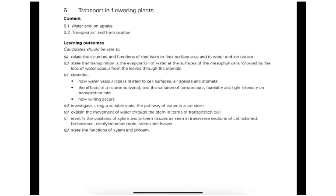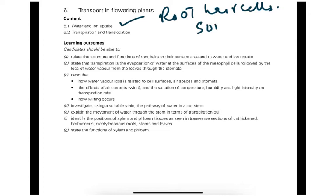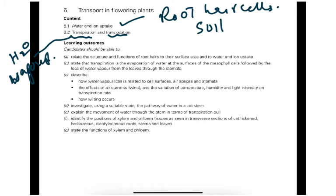The syllabus covers transport in flowering plants: water and ion uptake. We need to know the root hair cell and how water and ions are taken up from the soil. We also need to know two other terms: transpiration, which is all about water passing out of the leaves as water vapors, and translocation, which is all about movement in the phloem.